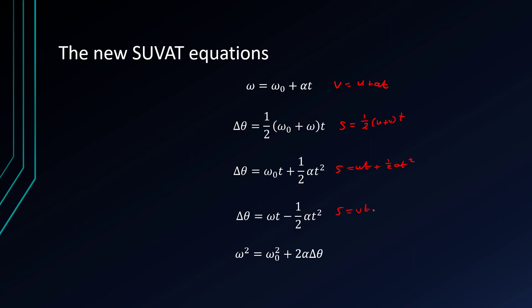This one comes from S equals V T minus a half A T squared, which means that delta theta equals omega T minus a half alpha T squared.